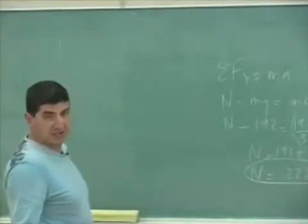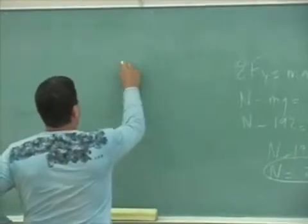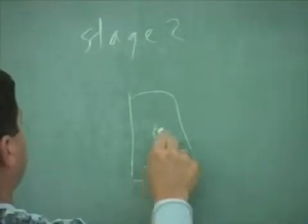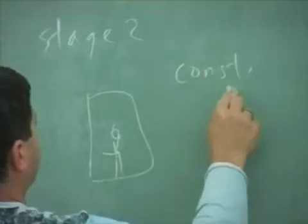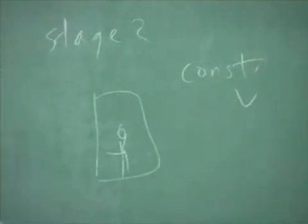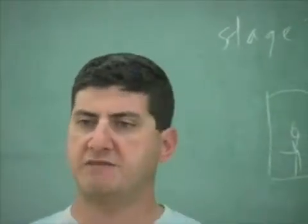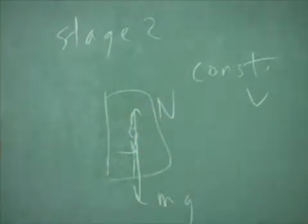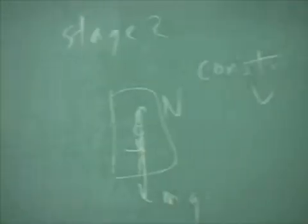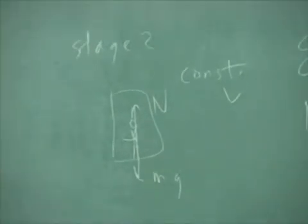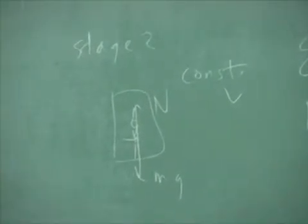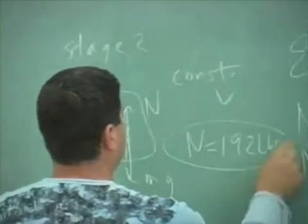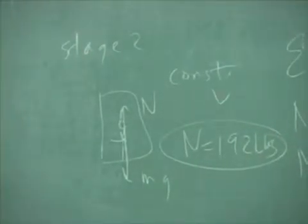And how about during the second stage? Constant velocity. Once it attains a certain velocity, the elevator just keeps going up at the same velocity. You still have an mg. You still have a normal force. The ground still has to support you. So the normal force doesn't go to zero. But they're equal, aren't they? The normal force is equal to your weight. And acceleration is equal to zero.